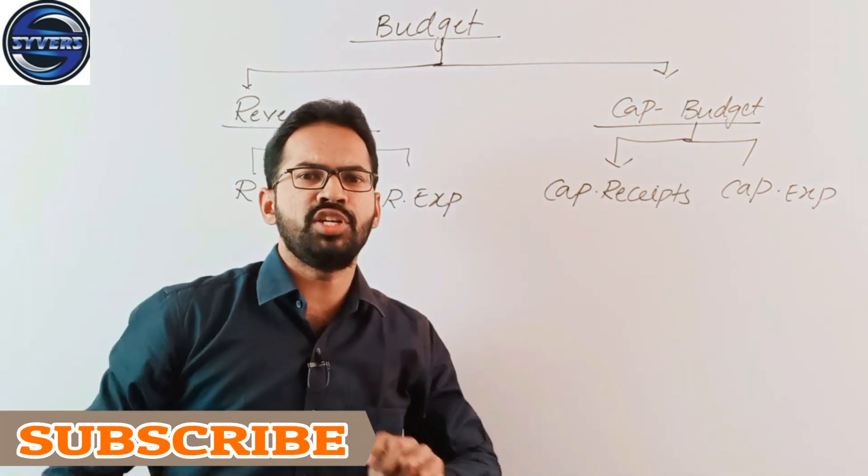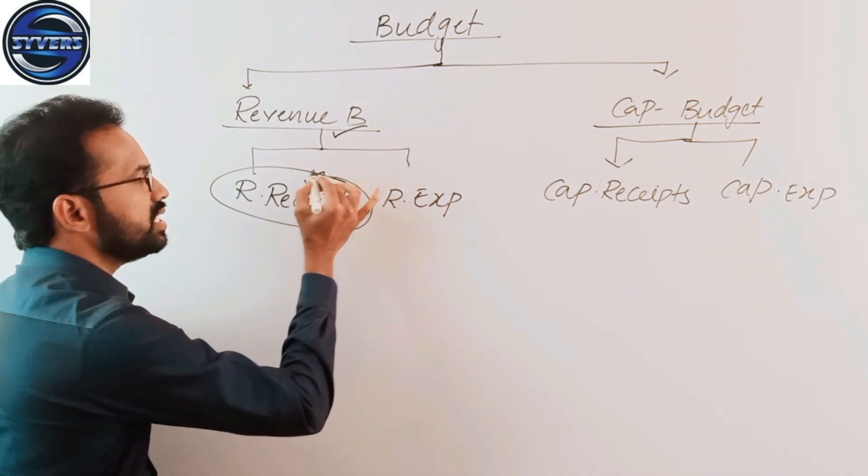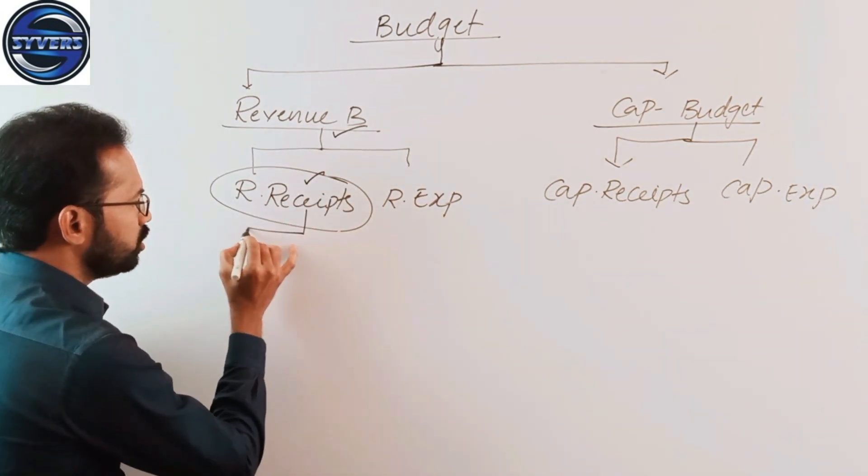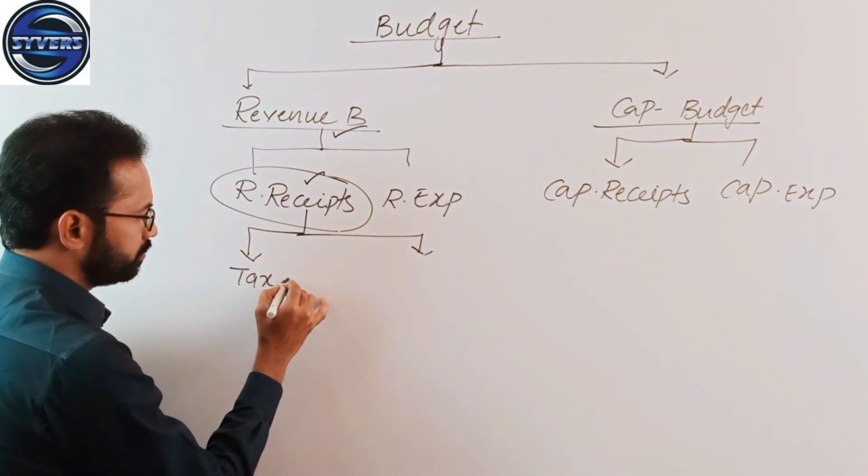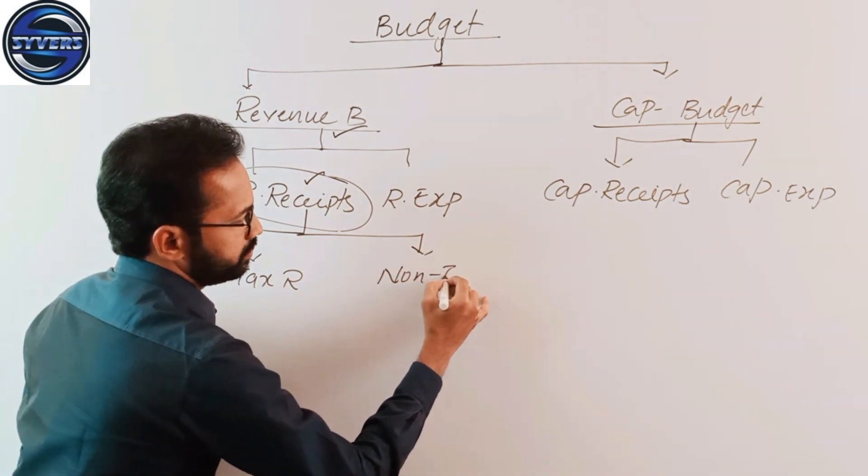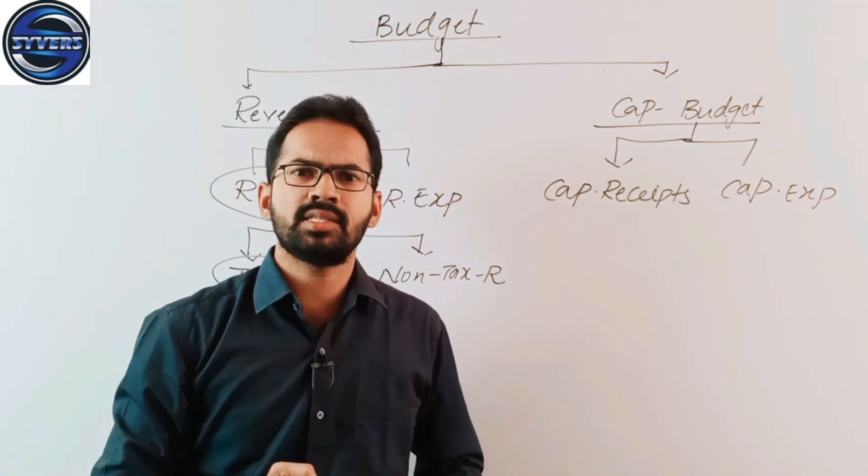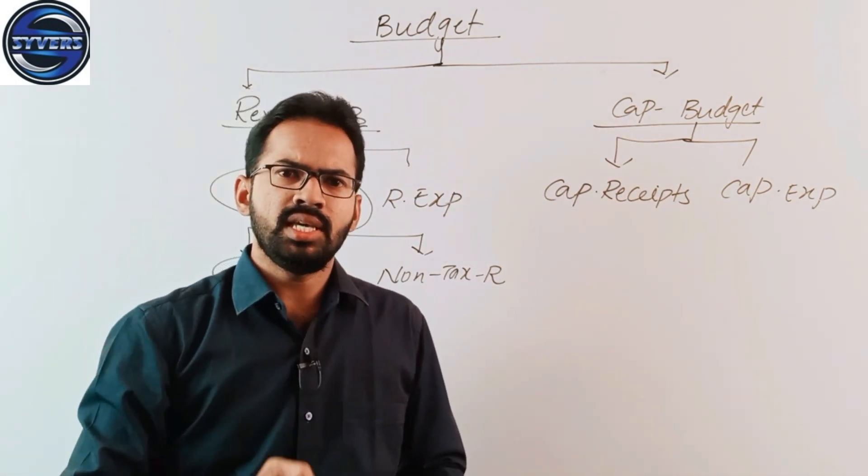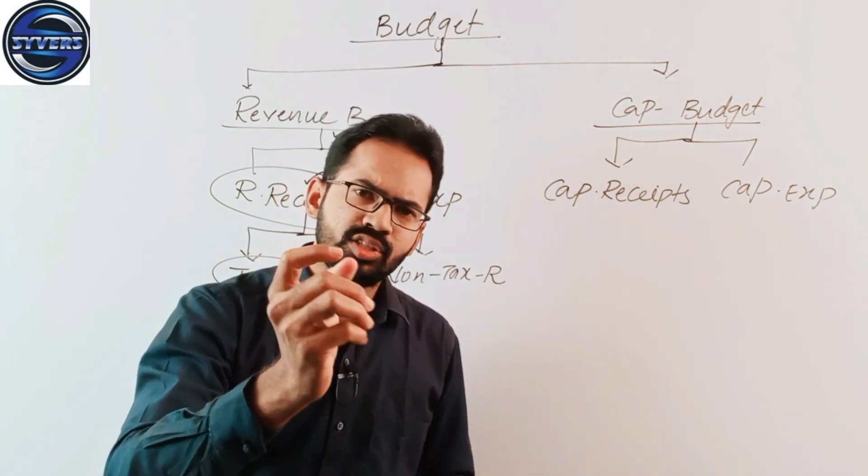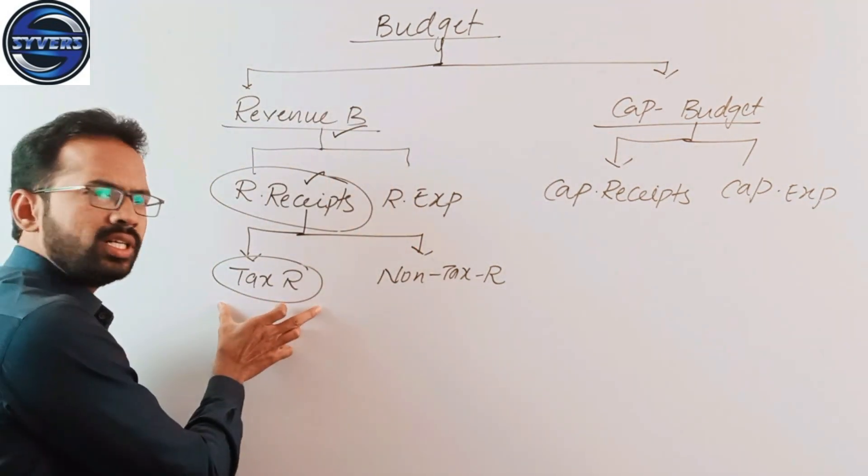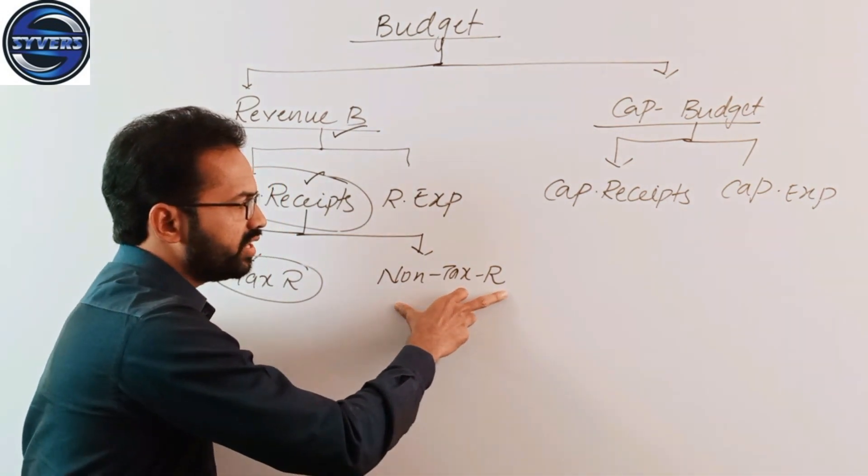Revenue receipts are of two types: tax receipts and non-tax receipts. Tax receipts examples include income tax, corporate tax, capital gain tax, GST, excise, custom, DDT, STT, surcharge, and others that fall under tax receipts.